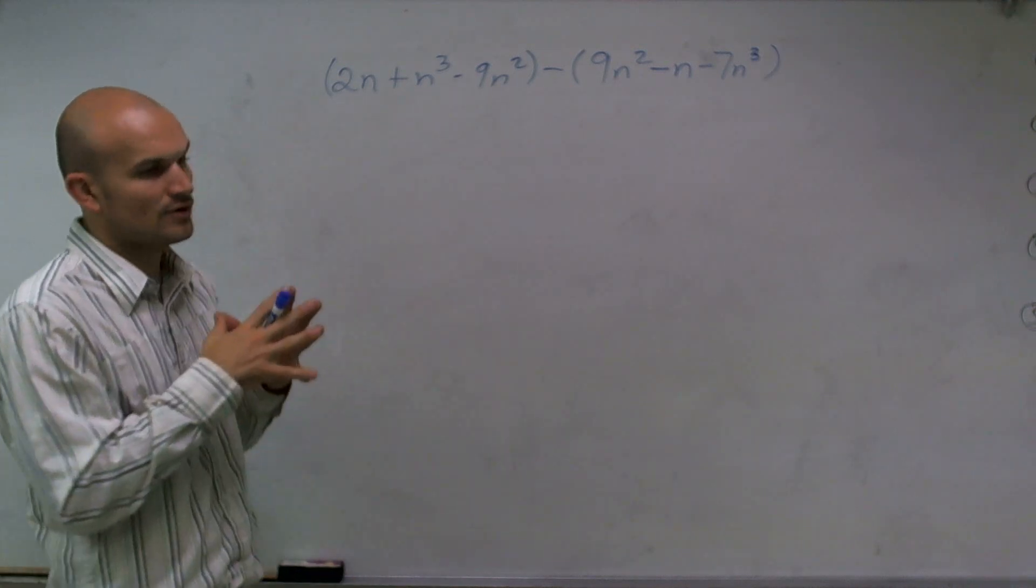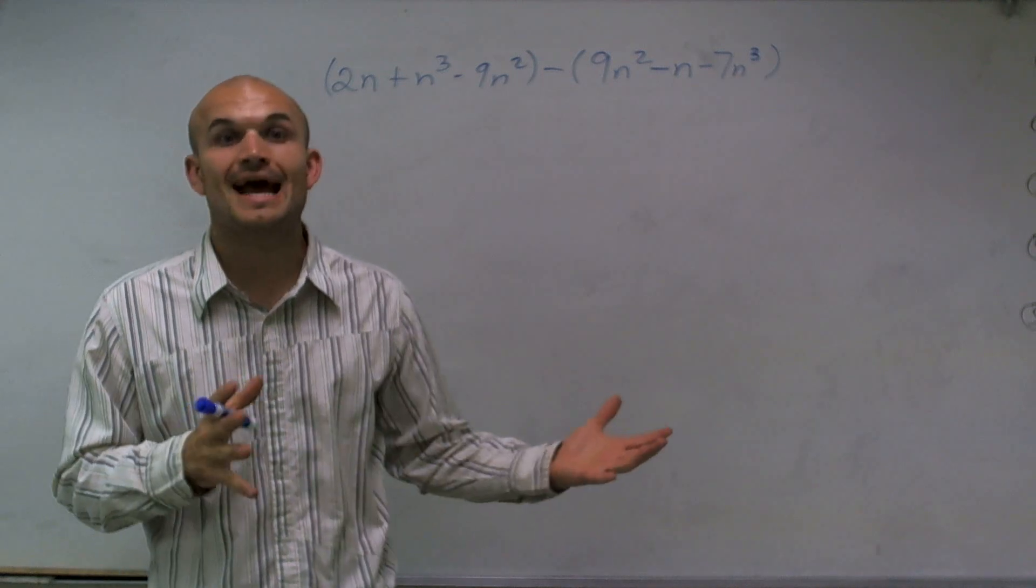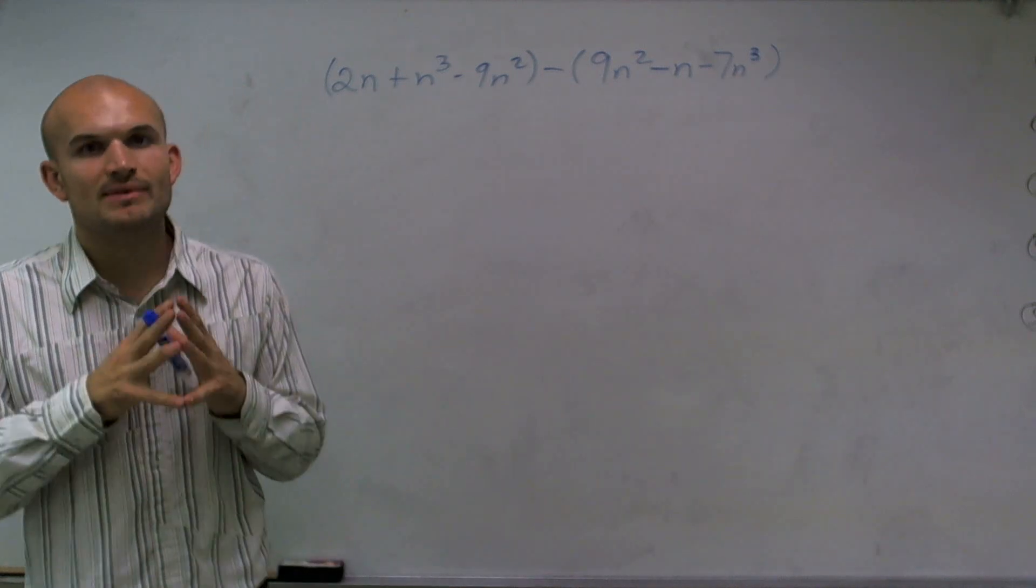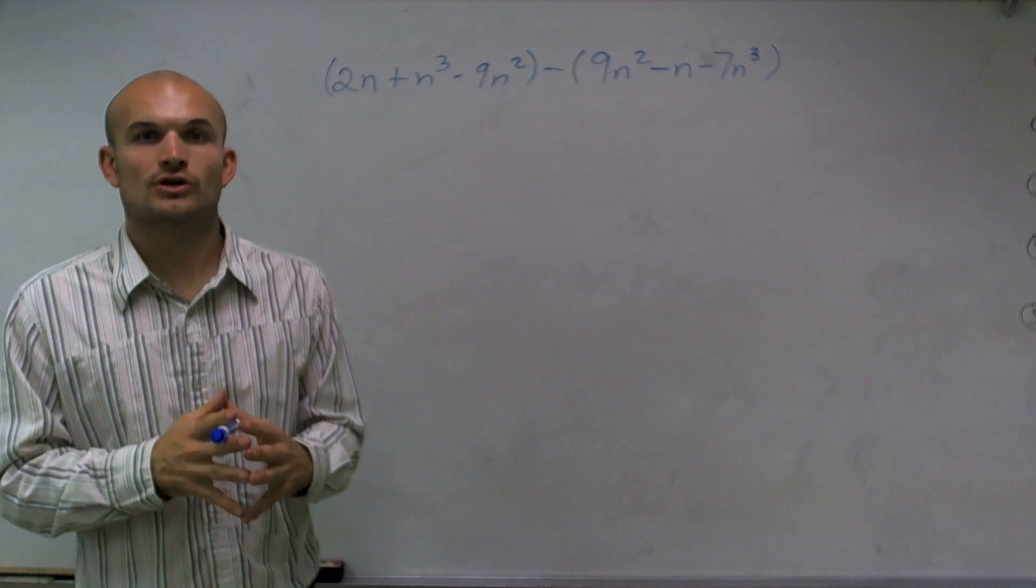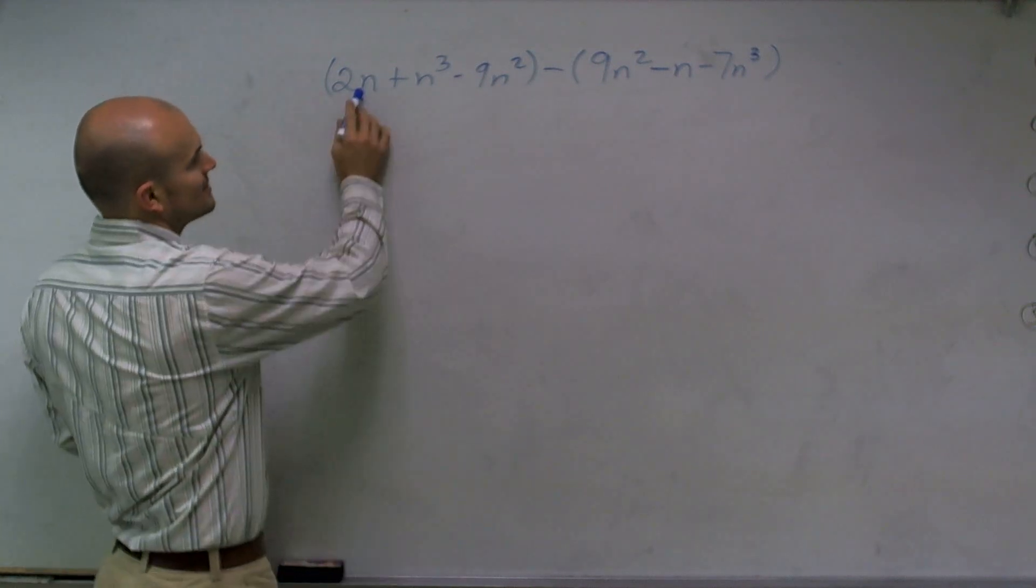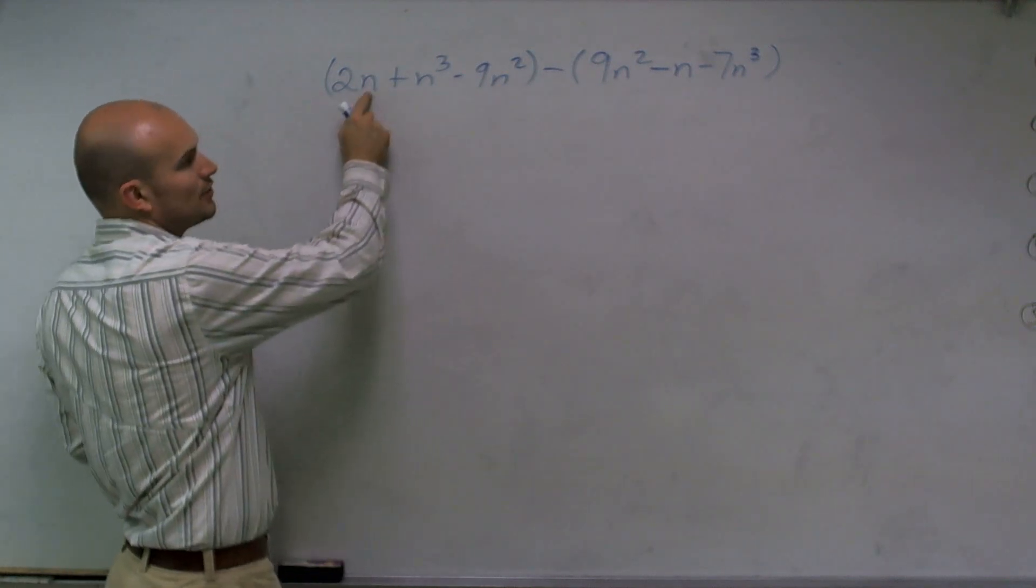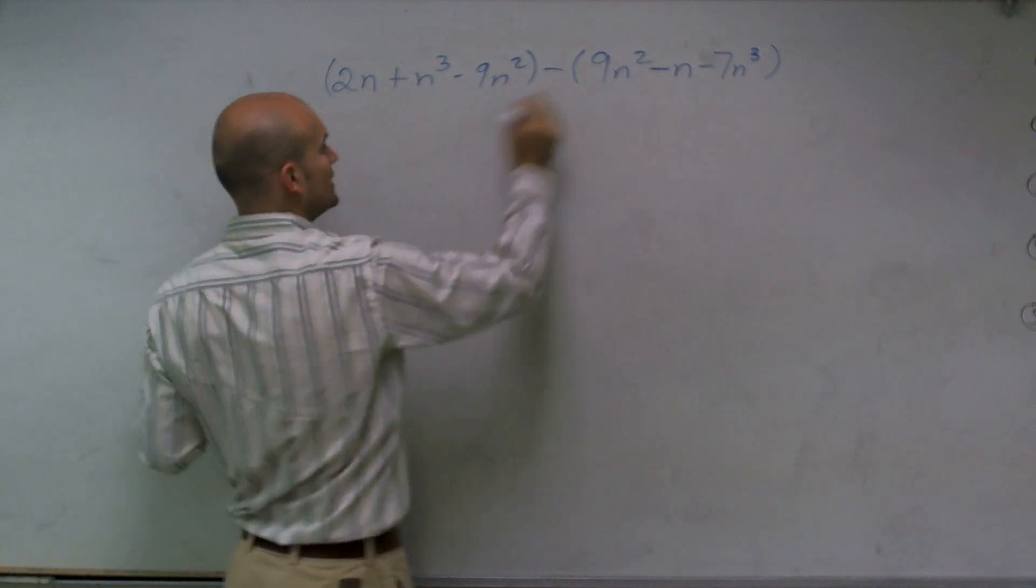So the main important thing, whenever we're going to be subtracting or even adding binomials and trinomials, we need to make sure we're only subtracting like terms. Meaning, I can only subtract 2n from another n to the first power, which I have over here.